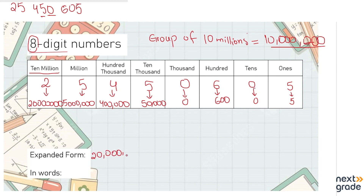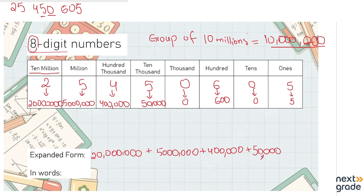Let's write the expanded form starting with the biggest value. That is ten million — twenty million. Then put a plus sign and it's five million. Then plus four hundred thousand, then plus fifty thousand. You can either write zero for the next thousand value or just leave it as it is.